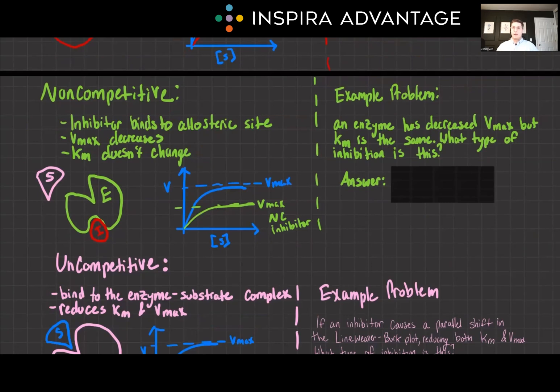Now moving on to non-competitive inhibitors. Here, the inhibitor will bind to an allosteric site, not the active site. This will cause a change in the enzyme's shape and function. This type of inhibition will decrease VMAX but doesn't affect KM. So this is kind of the inverse of competitive inhibition.